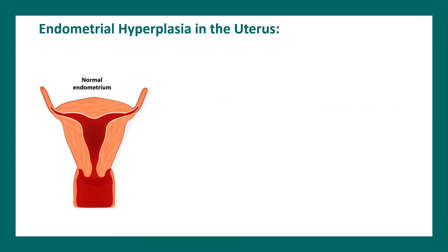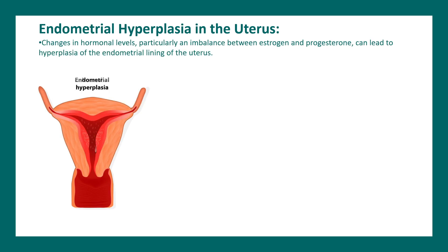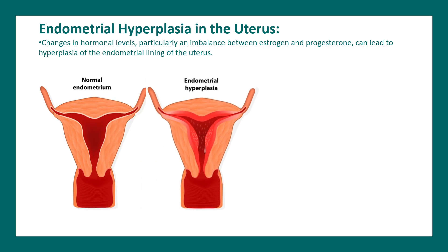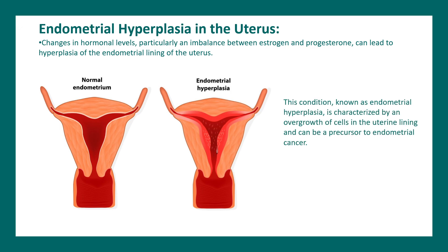There are also pathological examples of hyperplasia. Here we can see a normal endometrium compared to endometrial hyperplasia. Endometrial hyperplasia happens due to an imbalance between estrogen and progesterone levels, which leads to abnormal thickening of the endometrial lining of the uterus. This is obviously a pathological situation of hyperplasia.